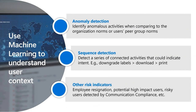Within Insider Risk Management we have anomaly detection, which identifies when users are accomplishing activity that is out of the norm — either for their organization, their own activity, or their peer group. We also have sequence detection, covering common sequences that indicate a user might be offboarding sensitive data, such as downgrading sensitivity labels, downloading information from SharePoint sites, and then printing it. We also have risk indicators like employee resignation and a potentially high-impact user designation that boosts risk scores for users with access to more sensitive crown-jewel-type data.